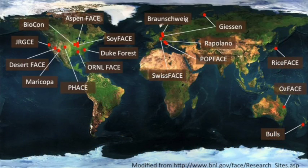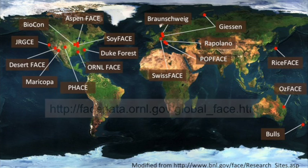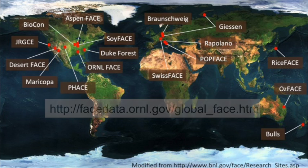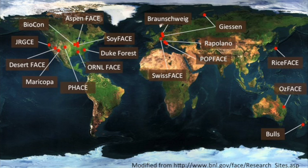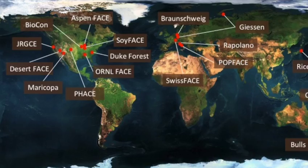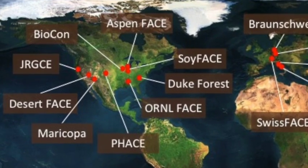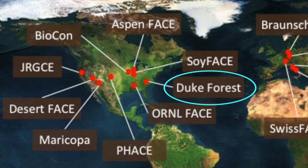This map shows many of the FACE experiments from around the world. A list of FACE experiments can be found at the website shown here. Today we will visit several of the FACE experiments shown in this map, and we will see video footage from two well-known FACE experiments: one at the Duke Forest in North Carolina and one on the Prairie in Wyoming.